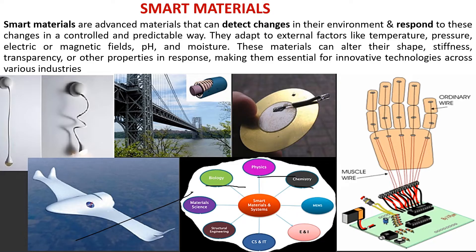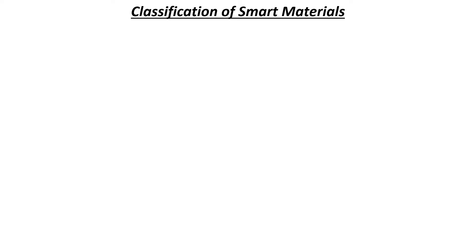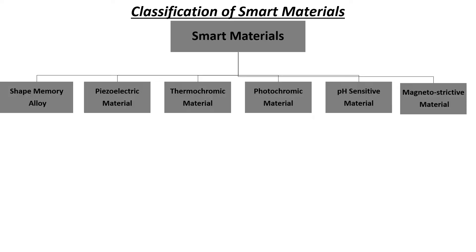Now let's discuss the classification of smart materials. Smart materials are of many types; we will discuss a few of them here along with their applications. Let's start with shape memory alloys. Shape memory alloys are materials that have the ability to return to their original shape after being deformed when exposed to specific temperatures. They are mostly used in medical devices like bone plates and in aerospace applications like deployable satellites.